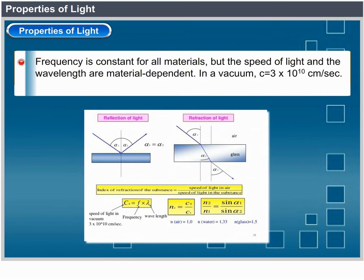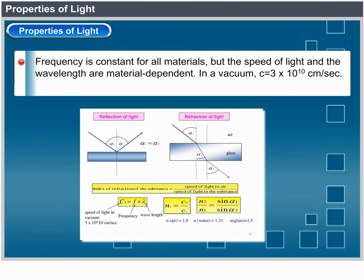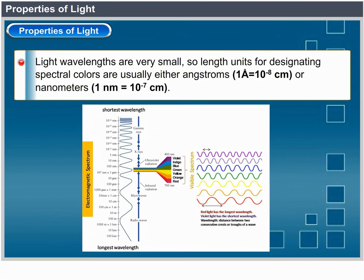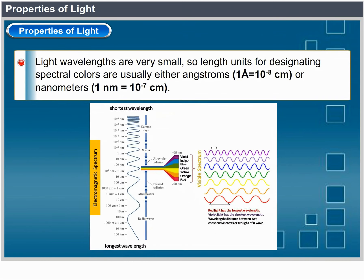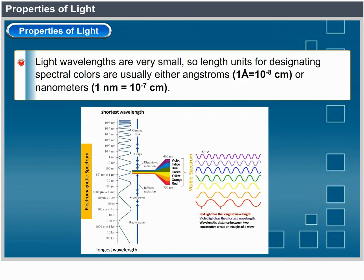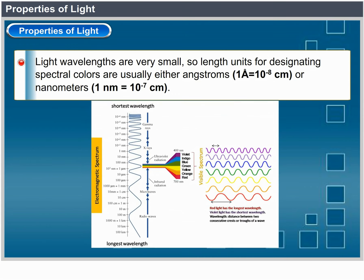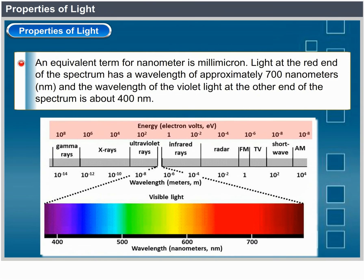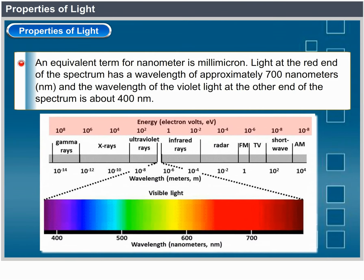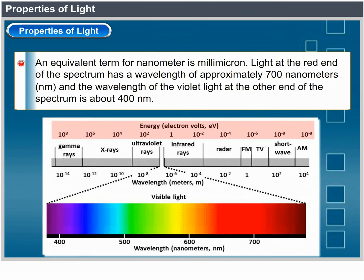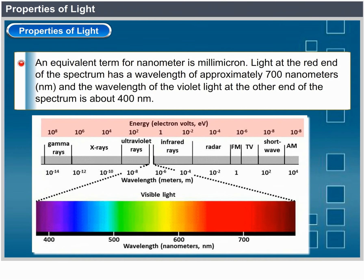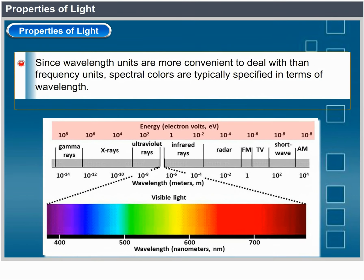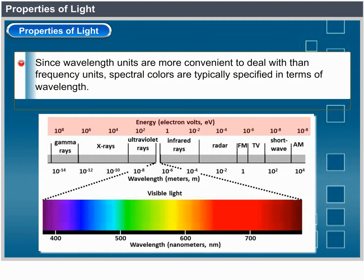Light wavelengths are very small, so length units for designating spectral colors are usually either angstroms (1 Å = 10⁻⁸ cm) or nanometers (1 nm = 10⁻⁷ cm). An equivalent term for nanometer is millimicron. Light at the red end of the spectrum has a wavelength of approximately 700 nm, and violet light at the other end is about 400 nm. Since wavelength units are somewhat more convenient than frequency units, spectral colors are typically specified in terms of wavelength.